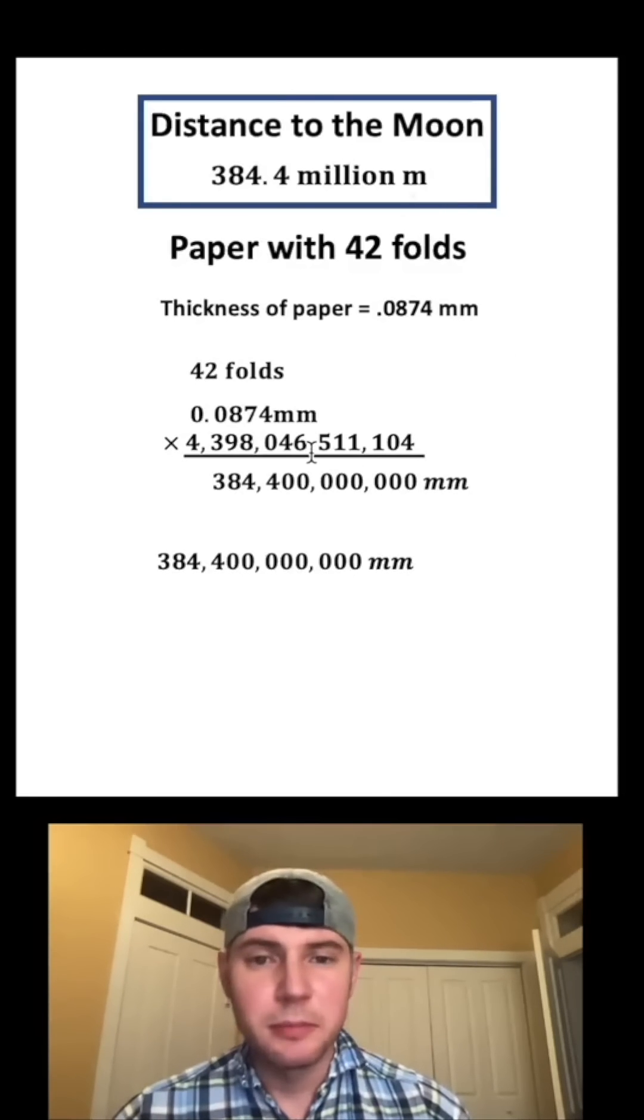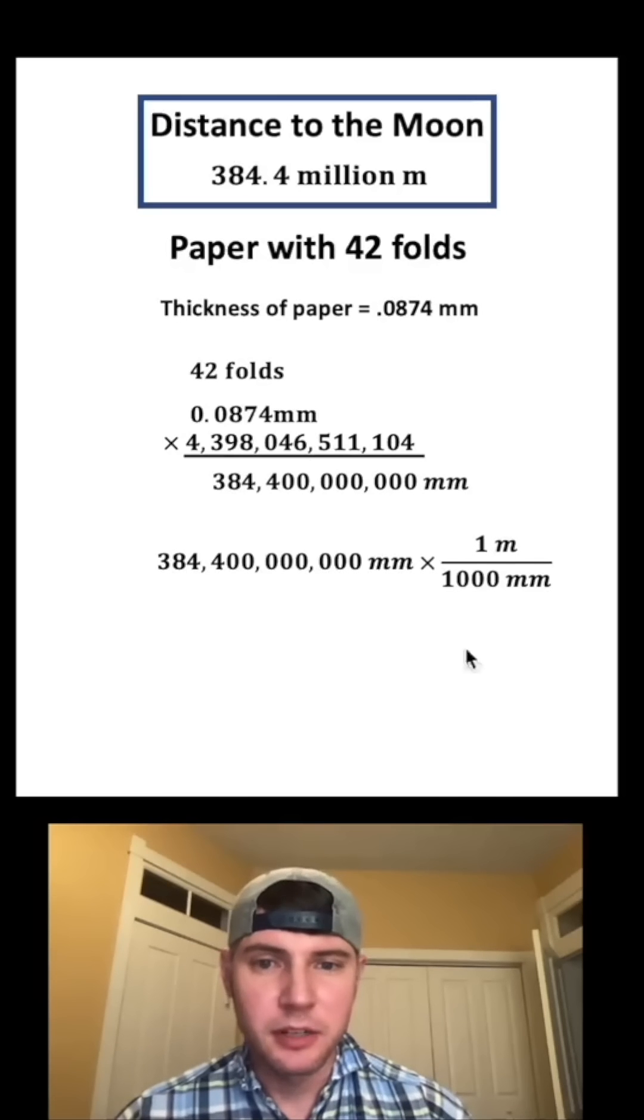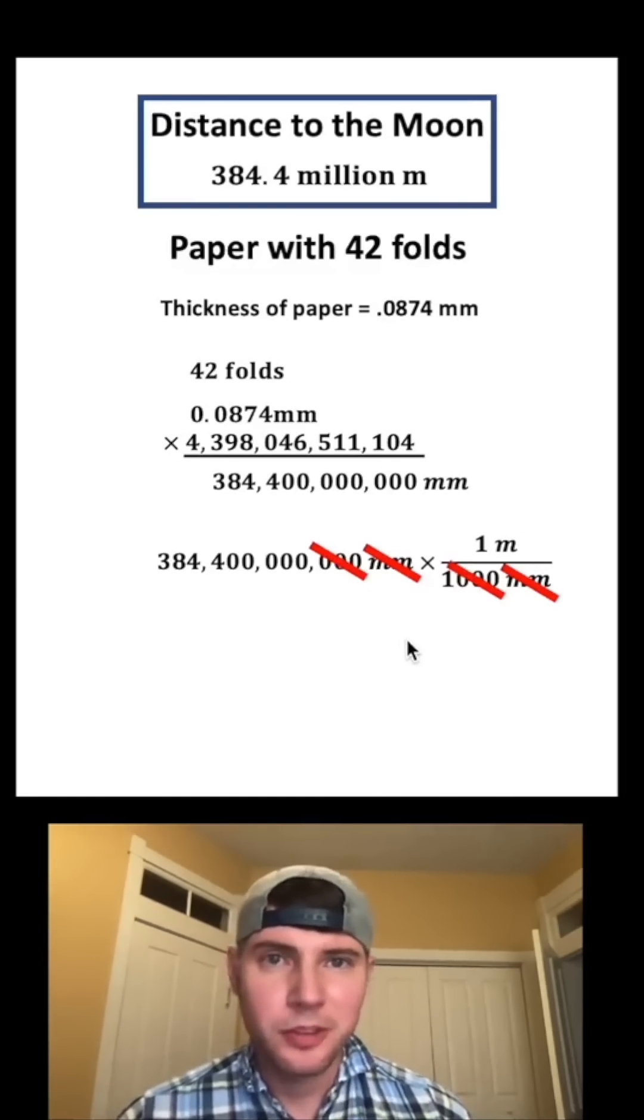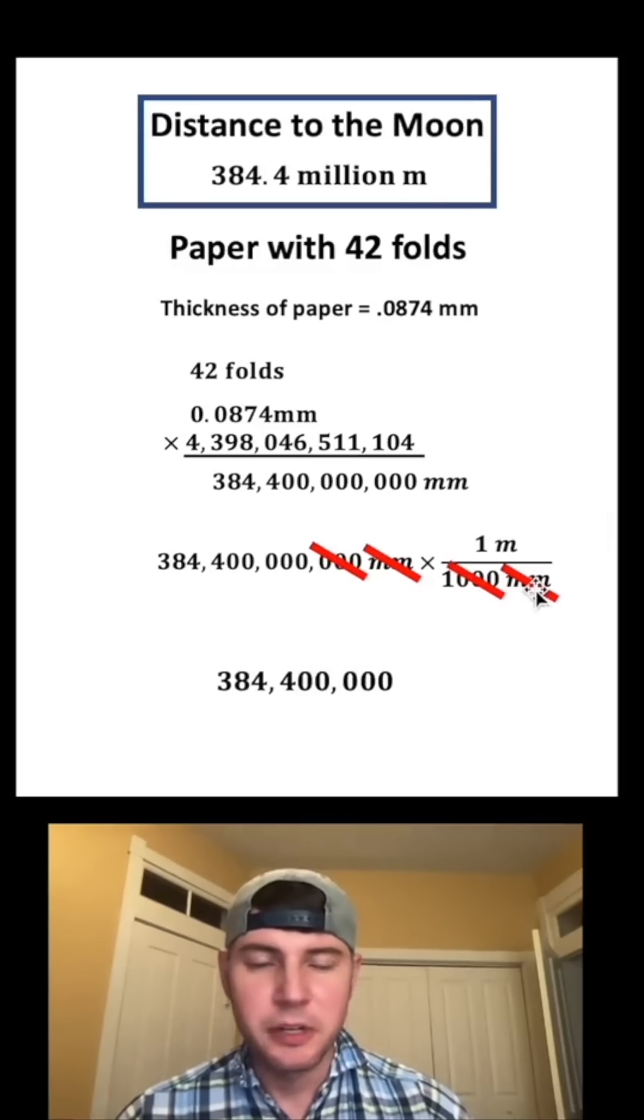So let's copy that down. And this was in meters, so let's convert this to meters. There's 1 meter for every 1,000 millimeters. When we multiply these, the millimeters cancel each other out, and we divide top and bottom by 1,000, which just gets rid of three zeros for both. Let's bring down the rest of this number, and let's bring down meters.